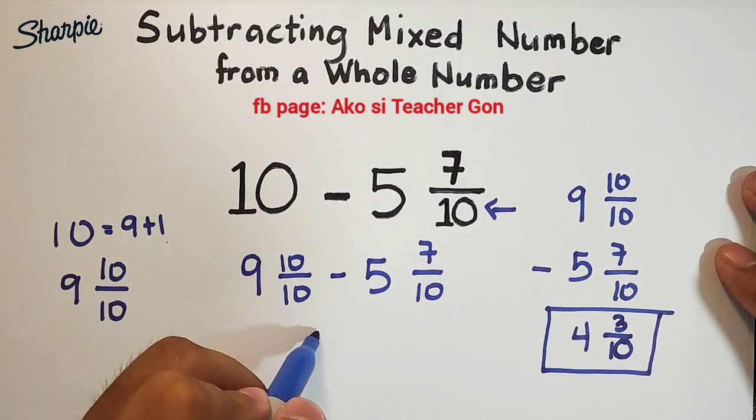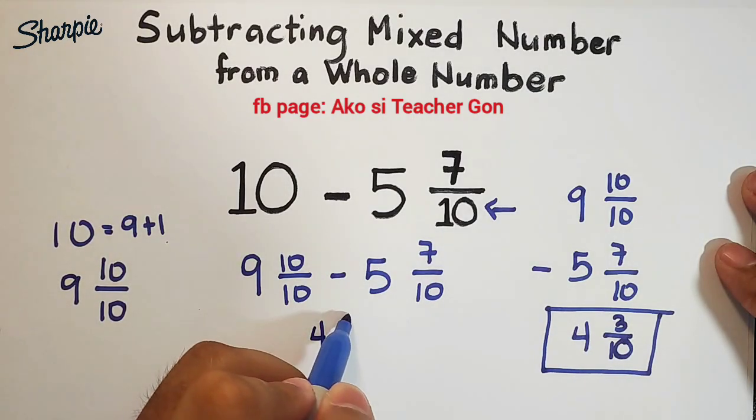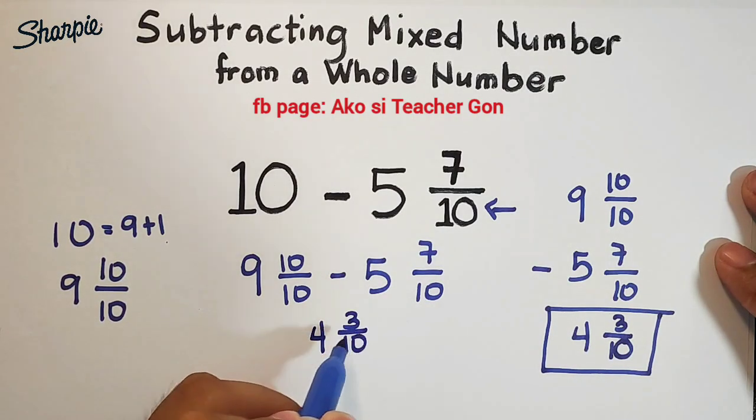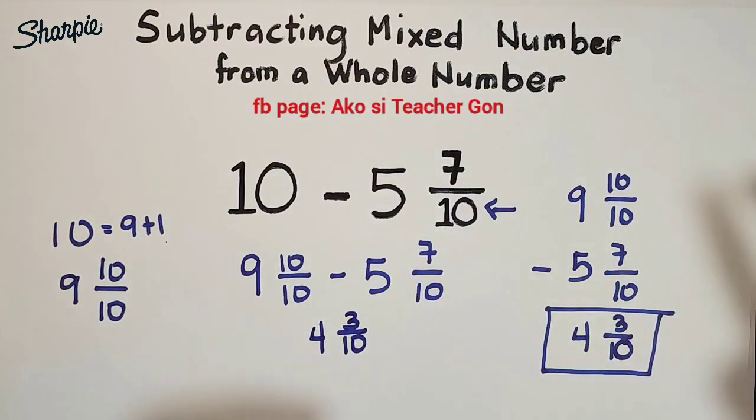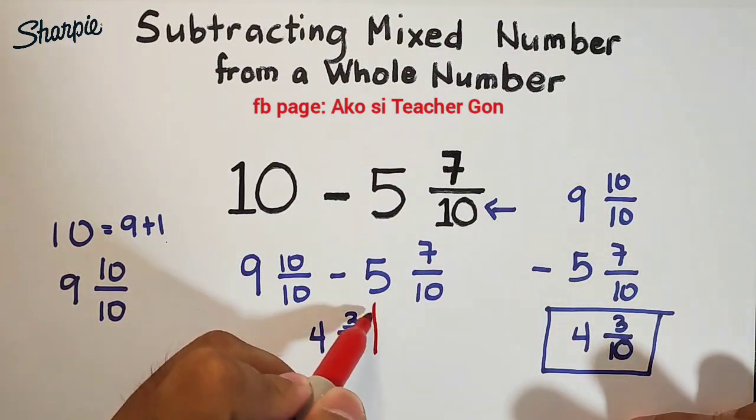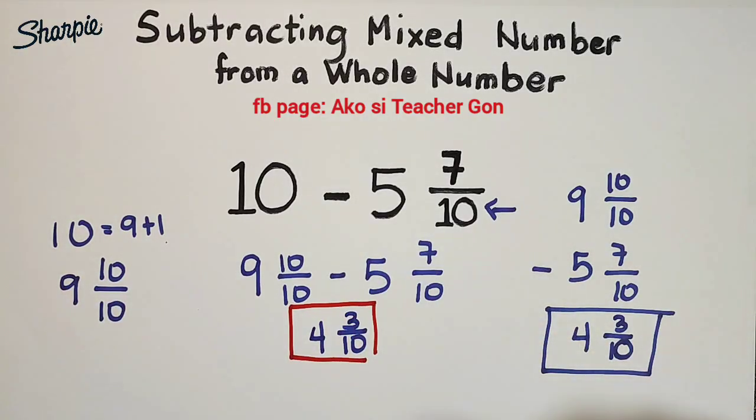Therefore guys, the correct answer when we subtract 10 and 5 and 7 over 10 is simply 4—we have 4 and 3 over 10. This is our final answer. So I hope guys that you learned something from this video on how to subtract a mixed number from a whole number.